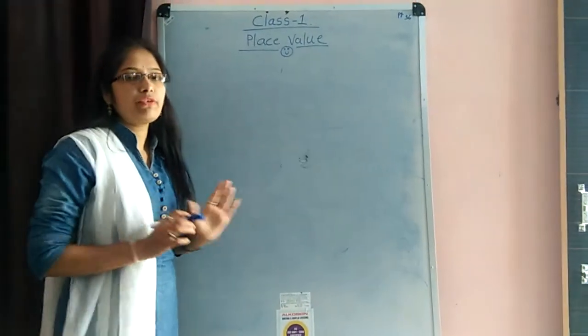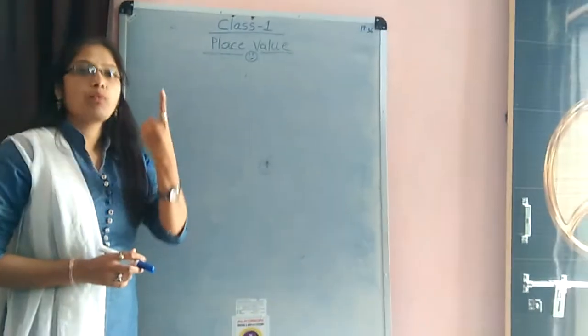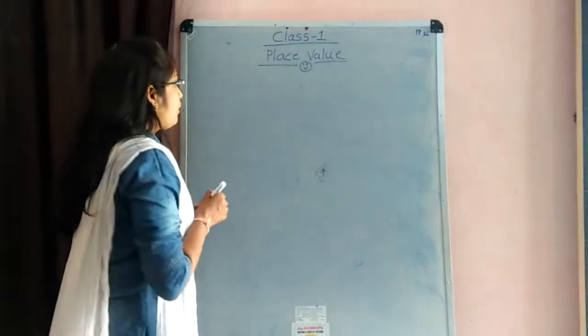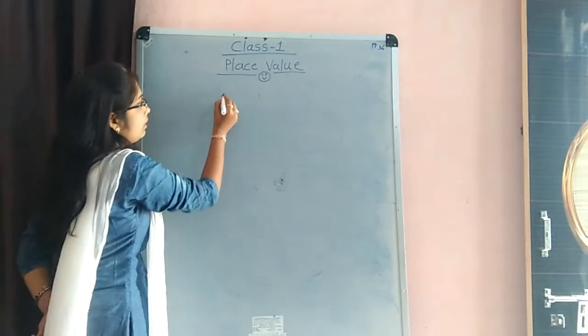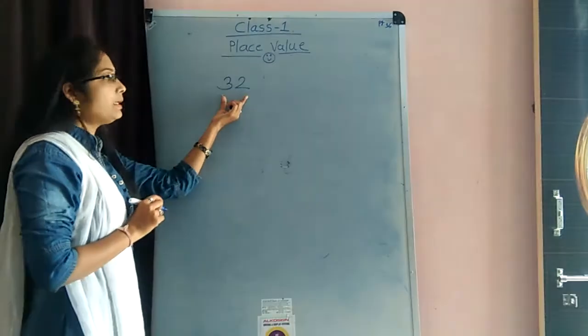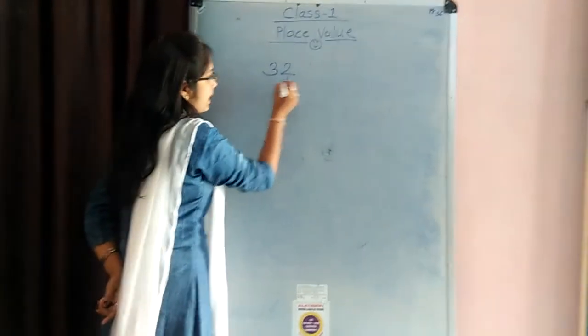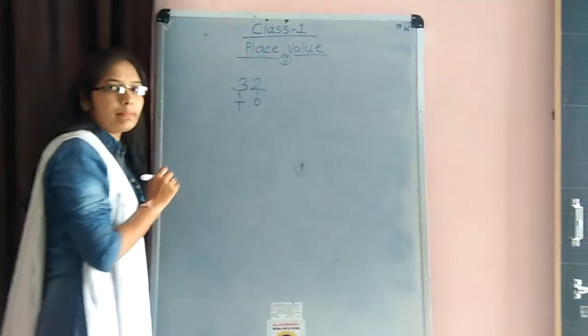What is mean by place value? In first standard, we learn only two place values that is the 1s and 10s. Okay, if here I write one number that is the 32. So, 2 is in 1s place and 3 is in 10s place.